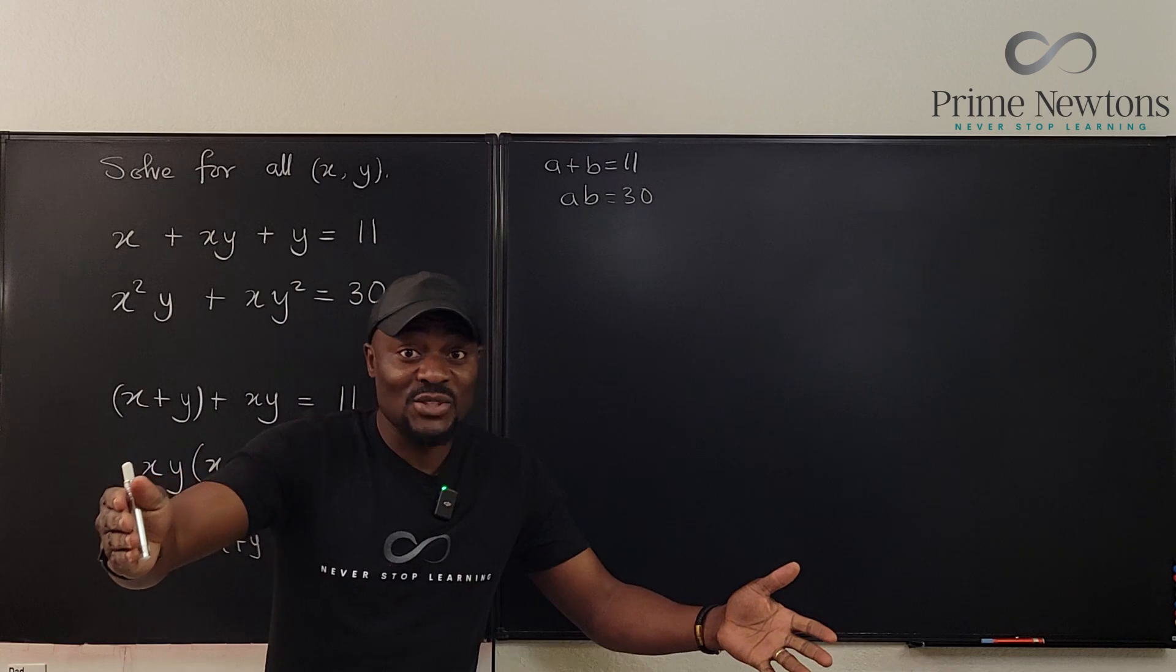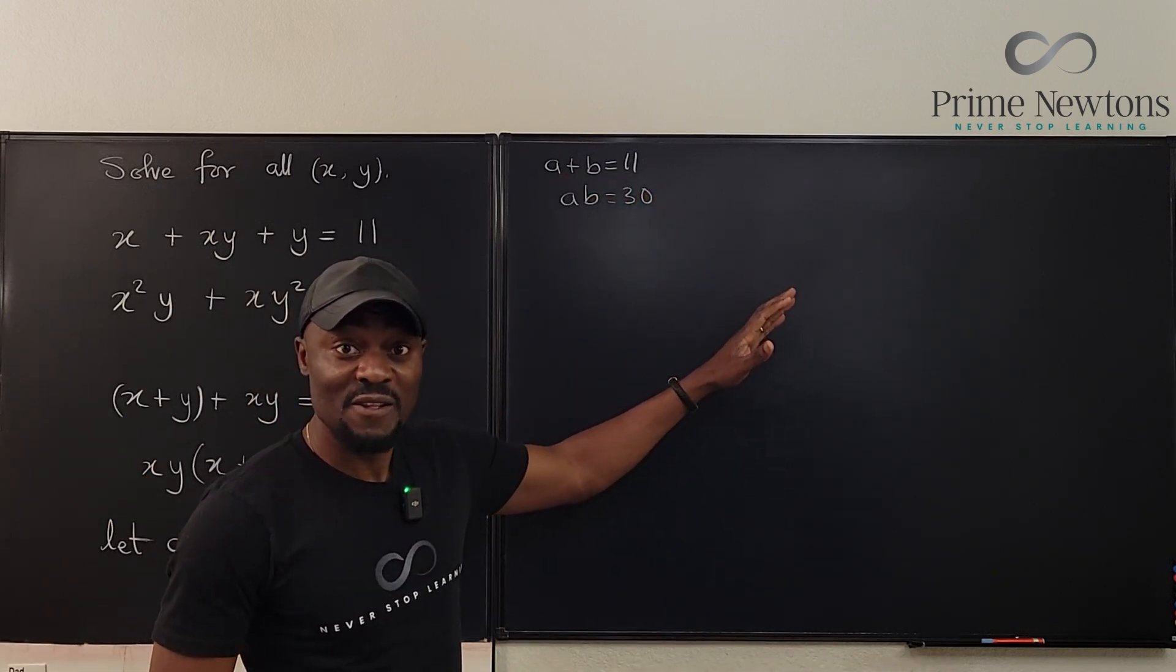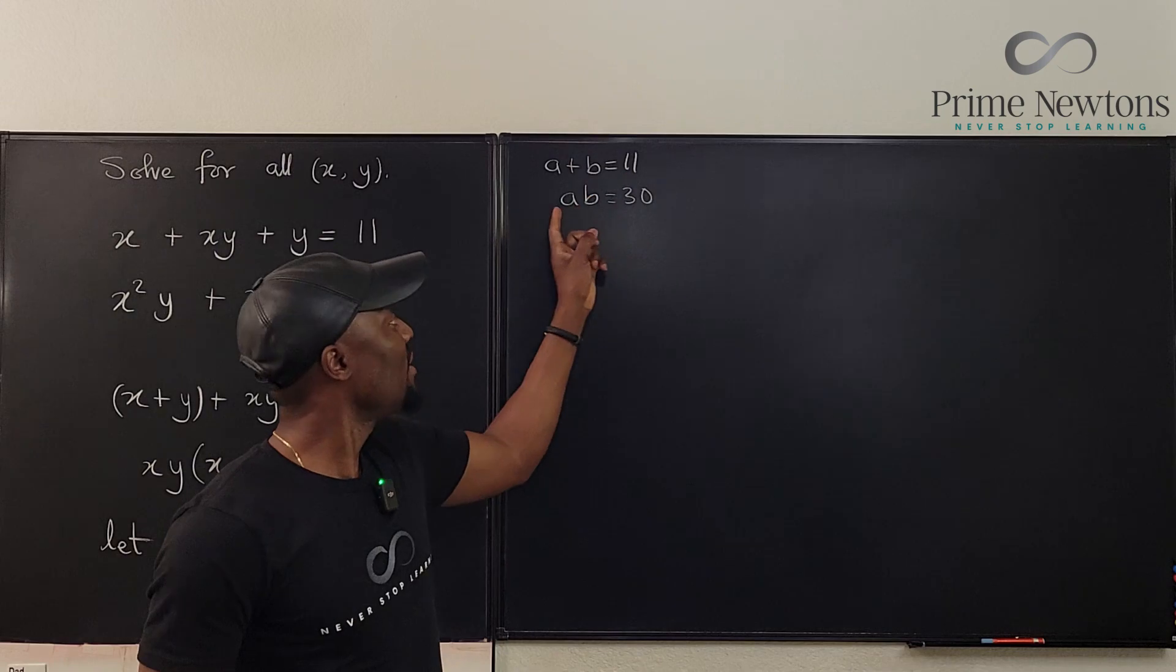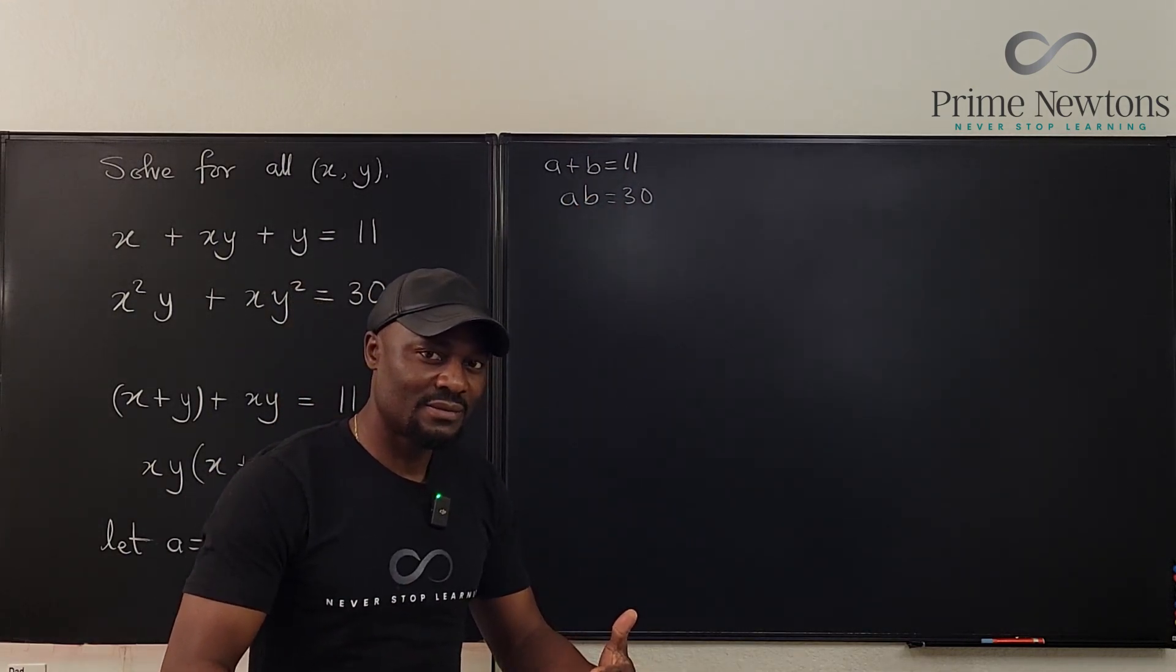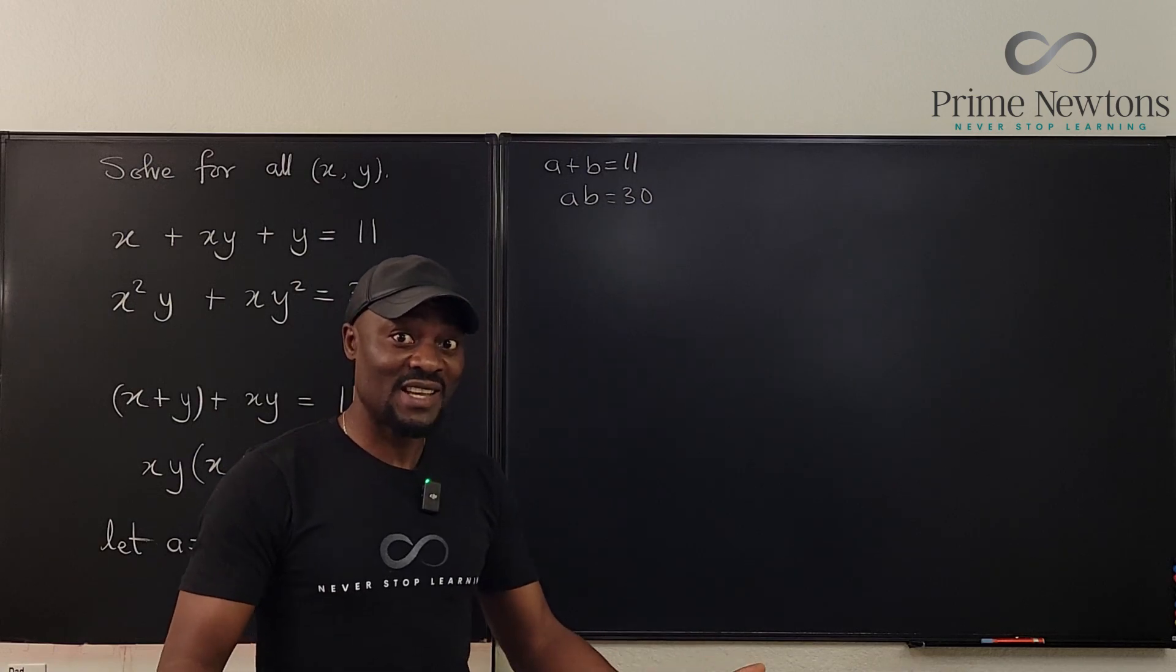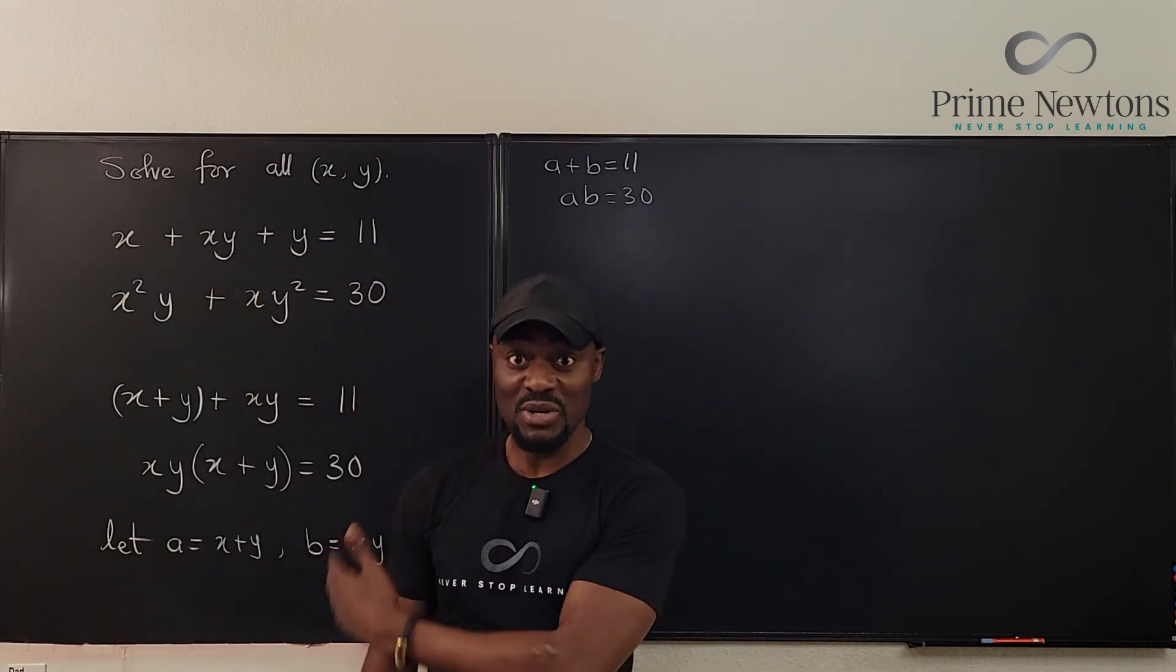So the question you're going to ask yourself is what two numbers, so this is what we do when we do factoring, what two numbers will you multiply to get 30, but when you add them together you're going to get 11? It's five and six. So that's the solution to this. This is a pretty easy problem, you just have to realize that this is the way to go.